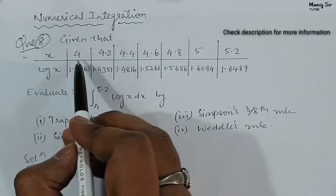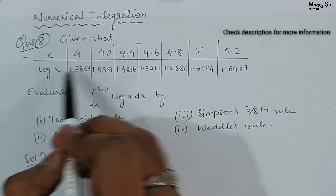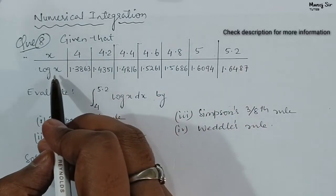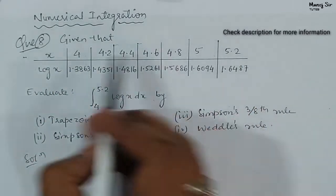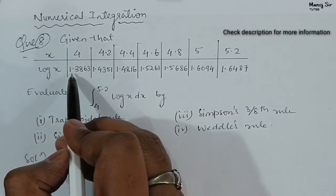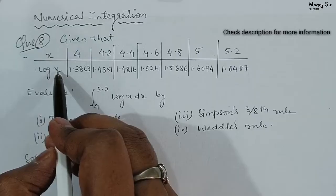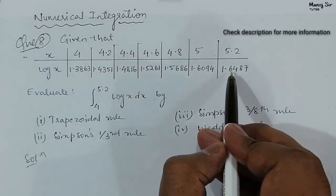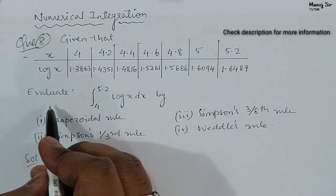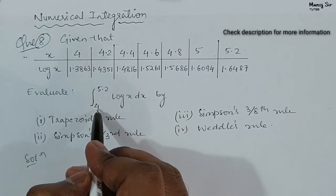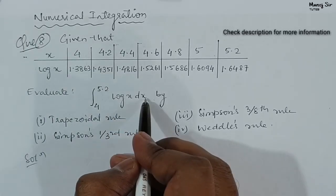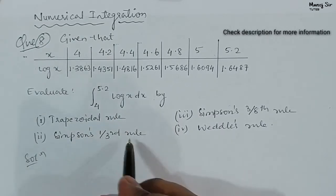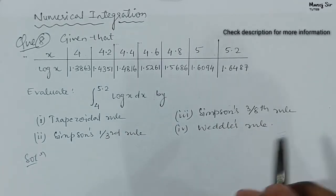The question says: given that we have a table of x and log x, the range of x goes from 4 to 5.2 and corresponding values of log x are given in the table. At x equals to 4, log x equals to 1.3868. At x equals to 4.2, log x equals to 1.4351. Similarly, at x equals to 5.2, log x equals to 1.6487. We need to evaluate the integration from 4 to 5.2 of log x dx using four rules: trapezoidal rule, Simpson's one-third rule, Simpson's 3/8 rule, and Weddle's rule.